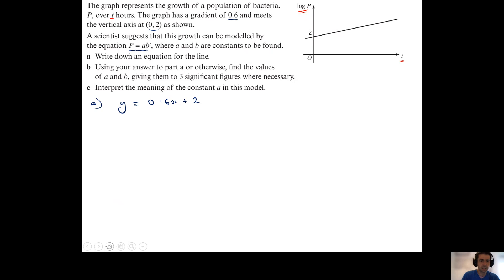So the implications of that for the equation of my straight line is that instead of writing y, I'm going to be writing log p, and instead of writing x, I'm going to be writing t. So the equation of the line in part a is log p equals 0.6t plus 2.